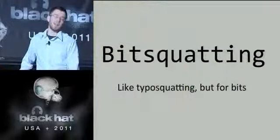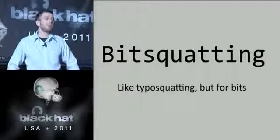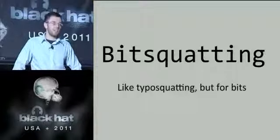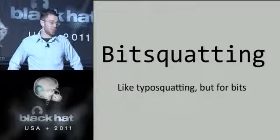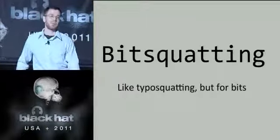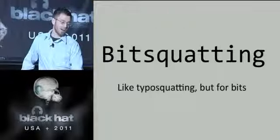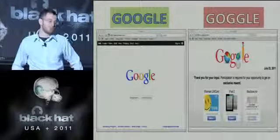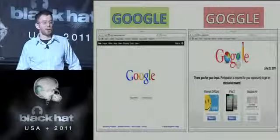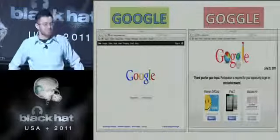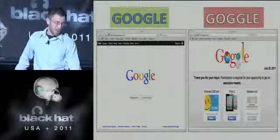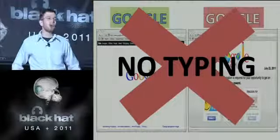This vulnerability is called bit squatting. The reason it's called bit squatting is because it operates like typo squatting, but for bits. While typo squatting relies on humans to make mistakes, bit squatting relies on computers to make mistakes. With typo squatting, you want to go to Google, type an extra G, and end up at Goggle, where instead of a search engine you can win Walmart gift cards or iPads.